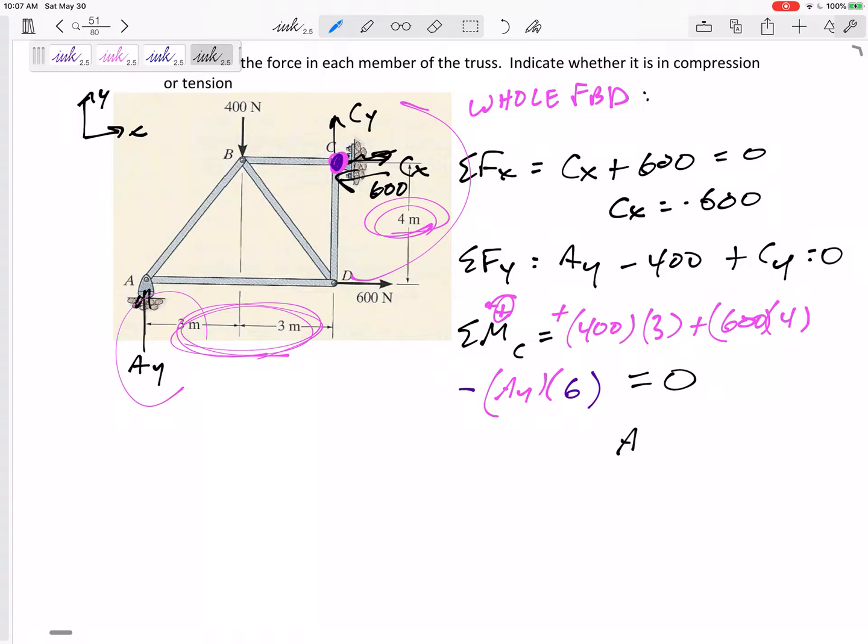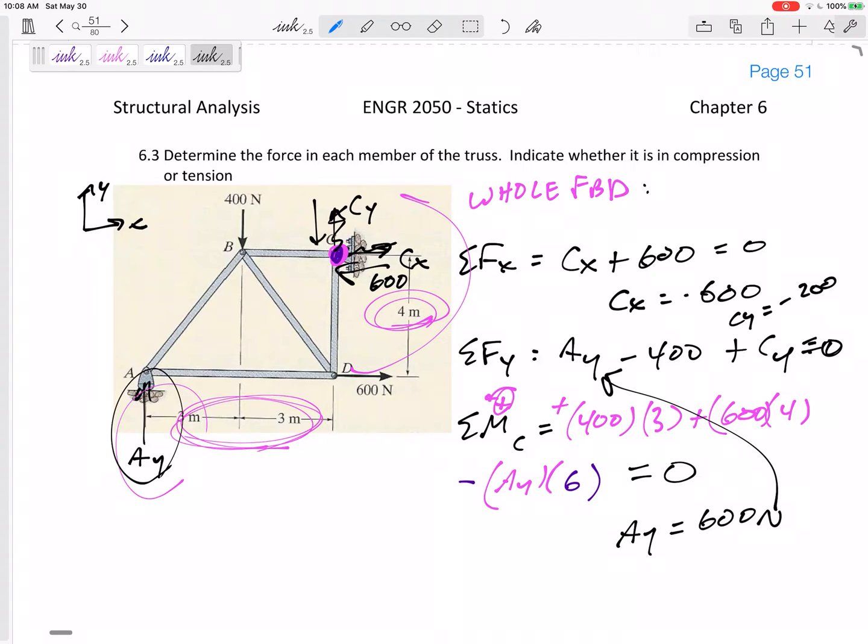I would get Ay to be positive 600. It means I guessed correctly. Then plug that in. 600 minus 400 is positive 200. But then set this equal to 0. Move that to the other side. I would get Cy negative 200, which means it's not up, it is down.